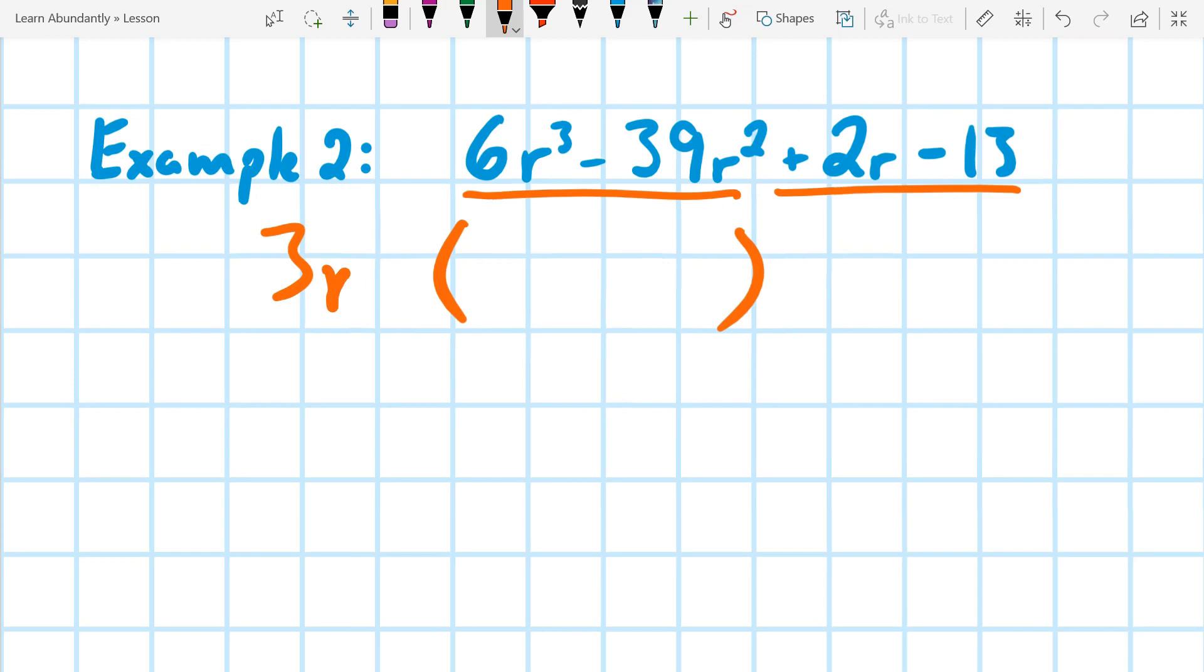And I can also take out an r because they both have an r, and the smallest exponent is two, so I can take out an r squared. And now when I go through it, I'm going to make sure I've taken out everything. So we have 2r minus 13 left.